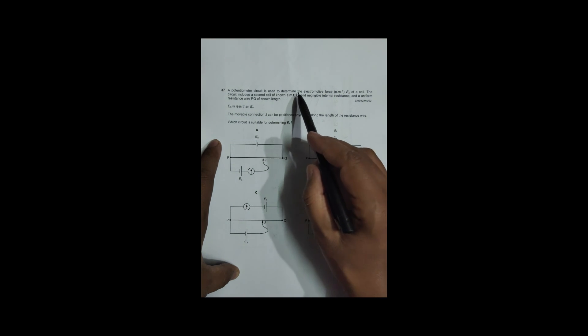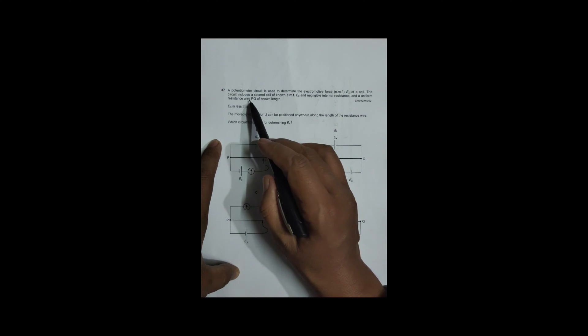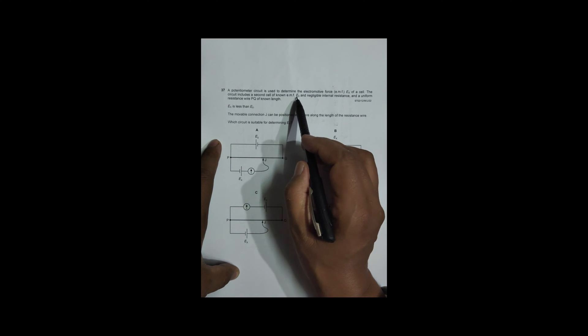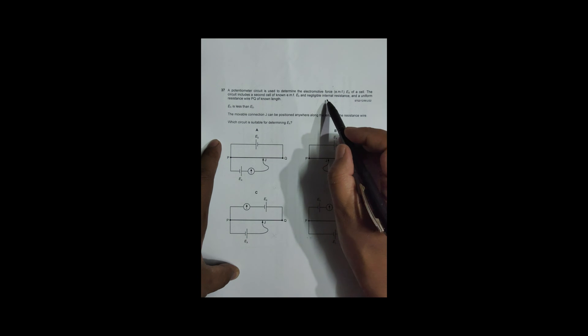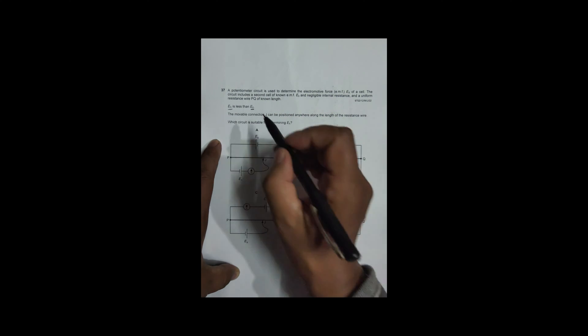It says that a potentiometer circuit is used to determine the electromotive force EMF Ex of a cell, unknown. Ex means unknown, whose EMF is not known. The circuit includes a second cell of known EMF E0 and a negligible inner resistance, and a uniform resistance wire PQ of known length. Ex is less than E0, so we have to take help of E0 to find the value of Ex here.